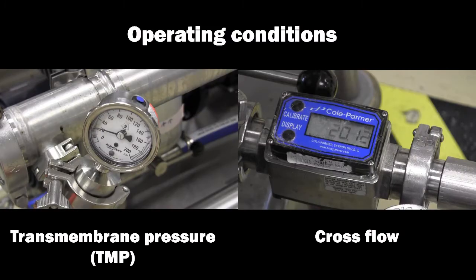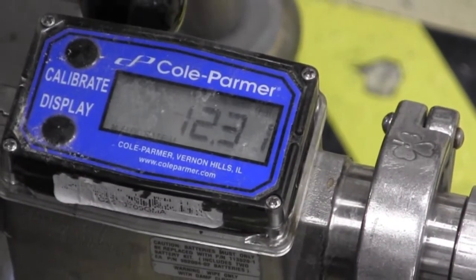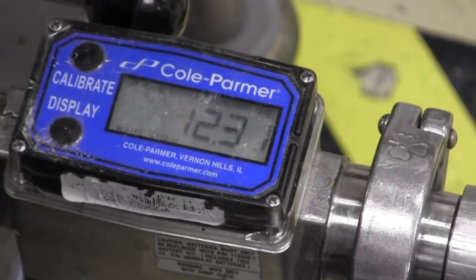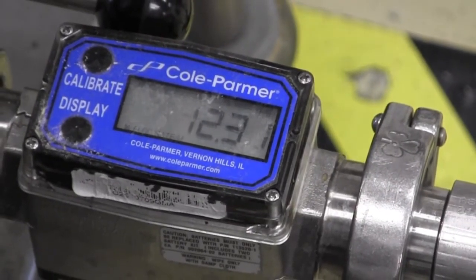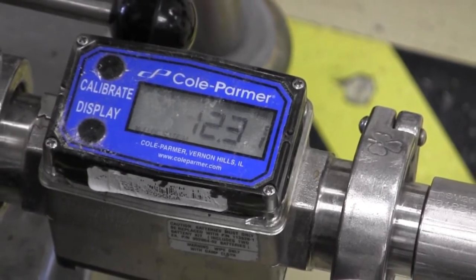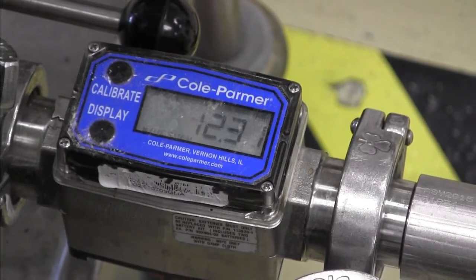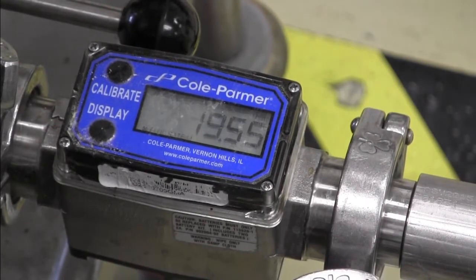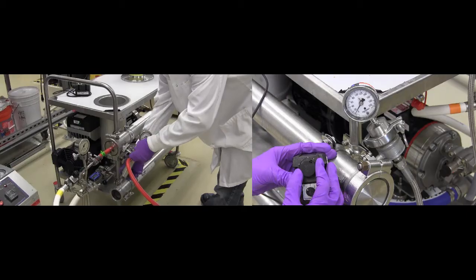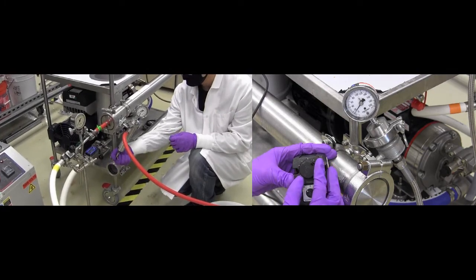In general, the goal is to maximize the TMP with a sufficient cross flow rate to prevent premature fouling of the membrane. For instance, running the system with a very high TMP but relatively low cross flow will result in an initially high flux that quickly degrades as the membrane pores are overwhelmed with accumulated particulates. A more conservative approach is to start with a high cross flow rate and a low TMP. As the process is monitored, the TMP can be gradually increased.